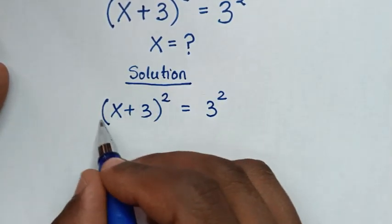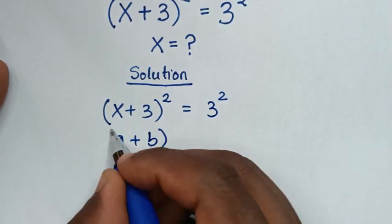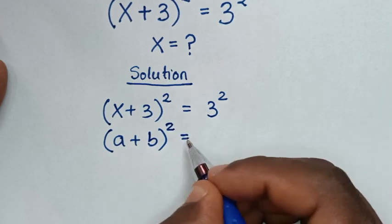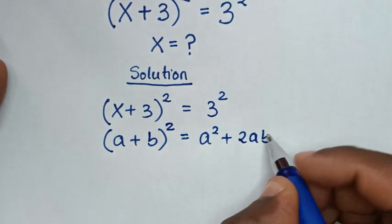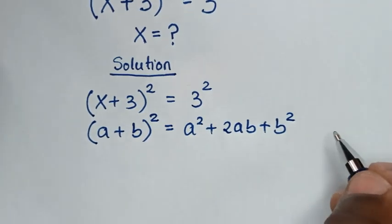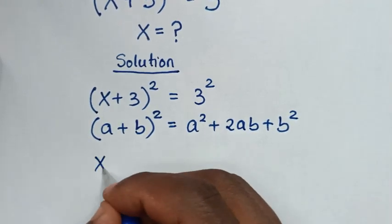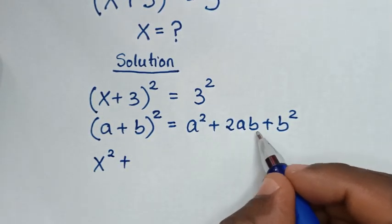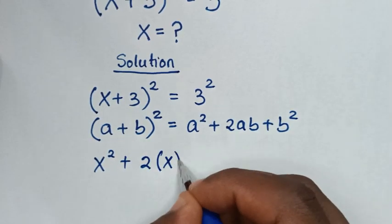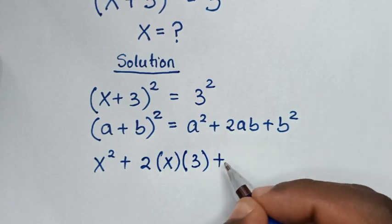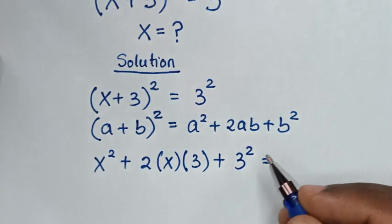In the first step, the left side is in the form of the algebraic rule (a + b)², which is equal to a² + 2ab + b². Now we'll apply this form here. So a² will be x², plus 2ab which is 2 times x times 3, then plus b² which is 3², equal to 3².